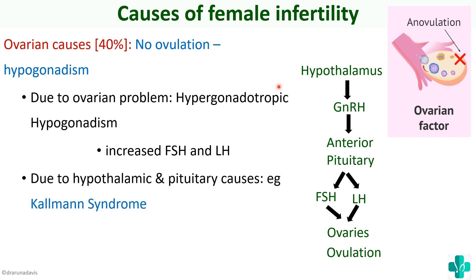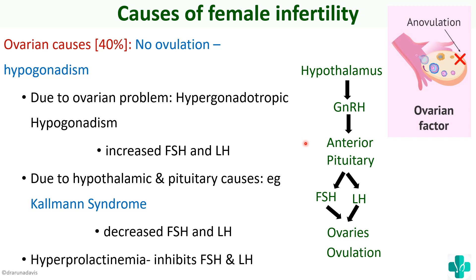The next type is due to hypothalamic and pituitary causes, where there are decreased FSH and LH and therefore no ovulation. A good example is Kallmann syndrome, where the hypothalamus and pituitary are affected but the ovaries are normal. Finally, we have hyperprolactinemia, where increased prolactin secretion causes decreased FSH and LH by feedback inhibition. These are the different ovarian causes of female infertility.